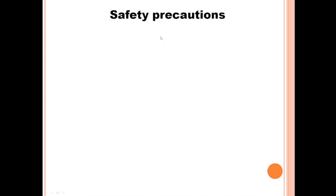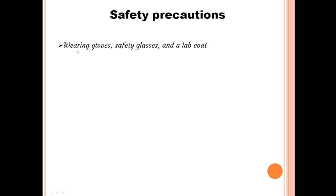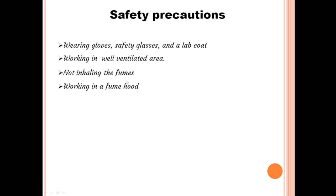Safety precautions are essential when working with formalin due to its hazardous properties. Personal protective equipment (PPE) such as gloves, lab coats, and safety goggles should be worn to prevent direct contact with formalin. Working in a well-ventilated area or using a fume hood helps minimize exposure to formaldehyde vapors, which can cause respiratory irritation and other health issues.